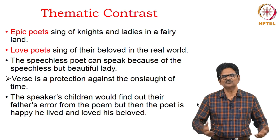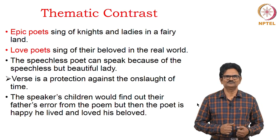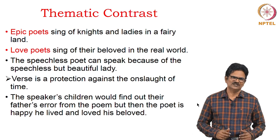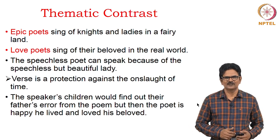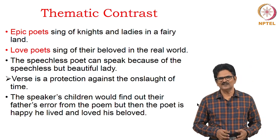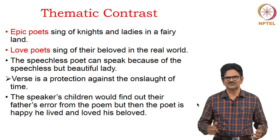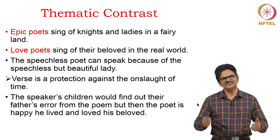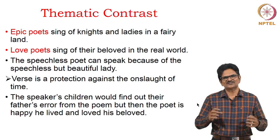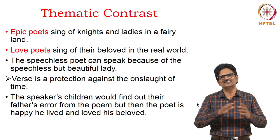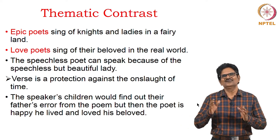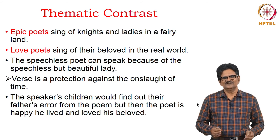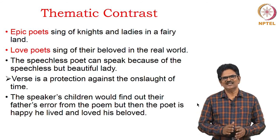Daniel considers verse to be a protection against the onslaught of time, like many other poets including Shakespeare. The speaker's children — that is, the verses — would find out their father's error from the poem, but the poet is happy that he lived and loved his beloved. The readers who may read the verses will come to know he had a lady love, but that doesn't matter. He is happy that he lived and loved. That's why it is often said it is better to love and lose rather than die without love at all.